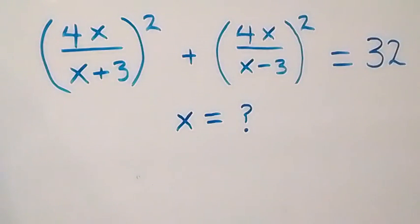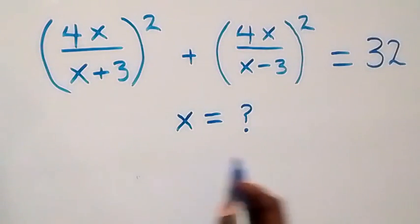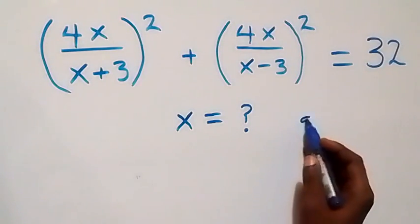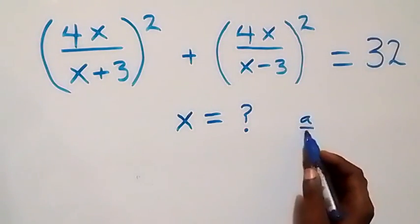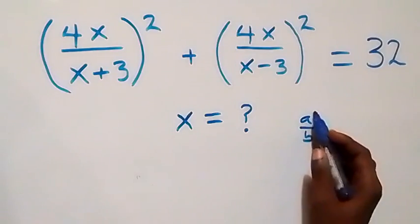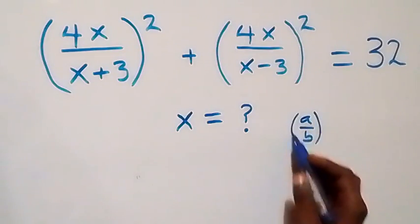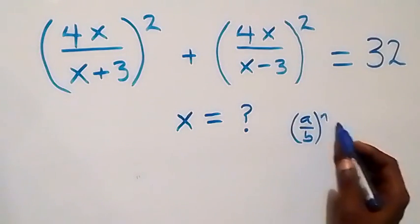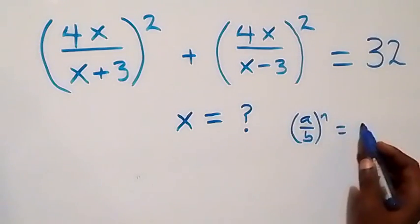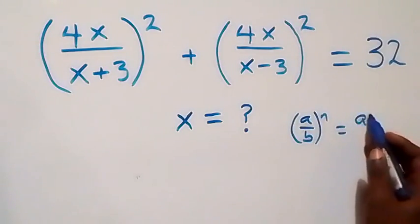Hello, you are welcome. How to solve for x in this algebra problem. We use the rule that (a/b) raised to power n can be written as a raised to power n over b raised to power n.